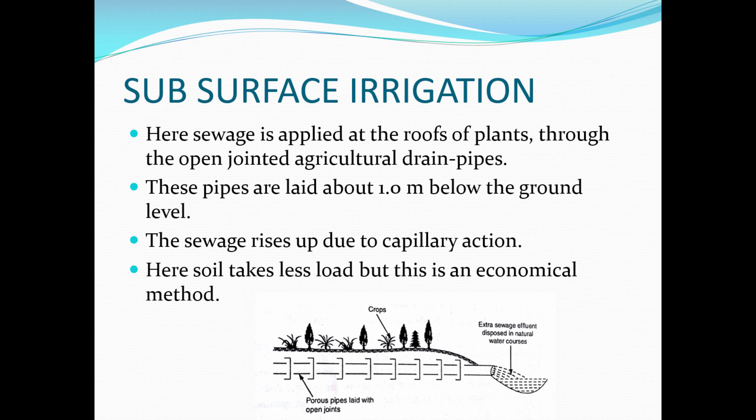Subsurface irrigation is the same concept as surface irrigation, but the sewage flow affects the roots directly rather than infiltrating from above. Pipes are constructed one meter below the ground, and sewage is passed through them. The pipes have small holes, and due to the capillary effect, the nutrients — potassium and others — are taken up by the roots. It is economical because it doesn't require any pump; capillary action naturally delivers nutrients directly to the roots.